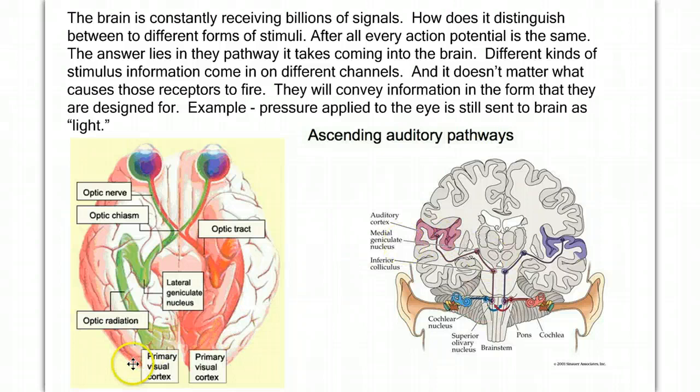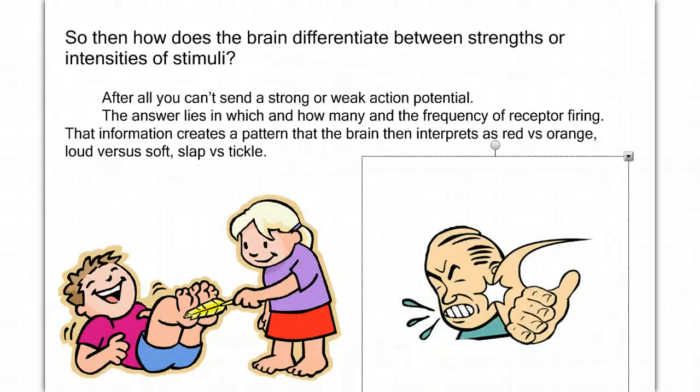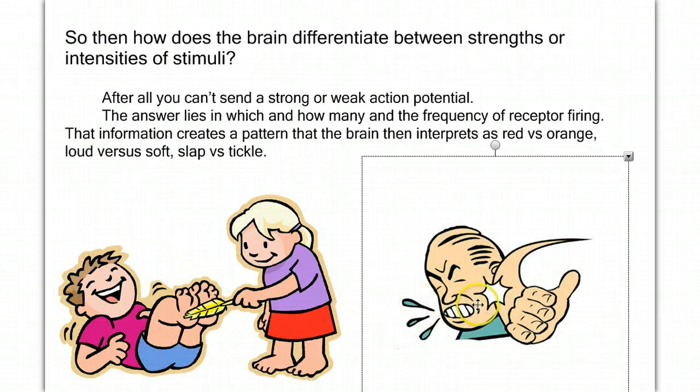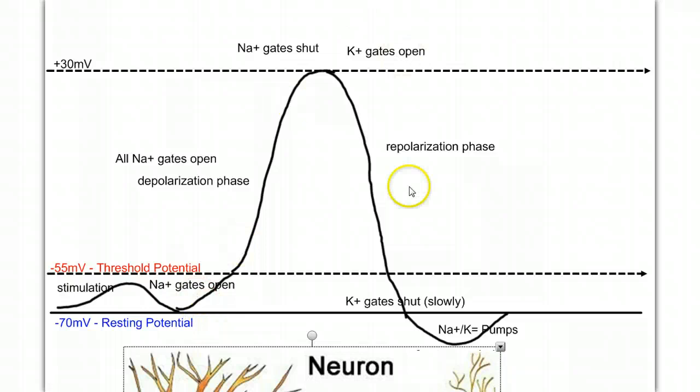What about strengths or intensity of stimuli? Again, we can't send strong action potentials versus weak action potentials. So how do we understand the difference between a soft noise and a loud noise? Between a tickle or a slap, or between reds and oranges? Well, the answer comes not in the size of the action potential, but how frequently the action potential may be traveling, and how many neurons are sending the information.